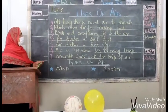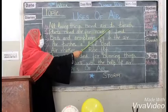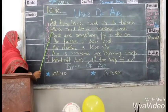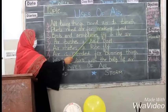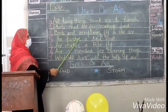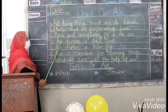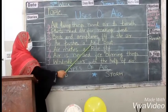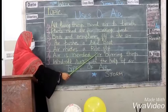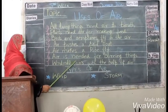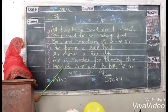Now we will revise the uses of air. All living things need air to breathe. Plants need air for making food. Birds and aeroplanes fly in the air. Air pushes a sailboat. Air makes a kite fly. Air is needed for burning things.